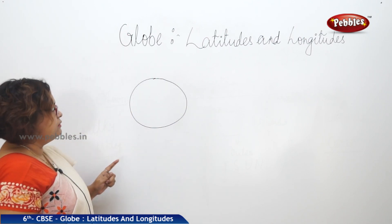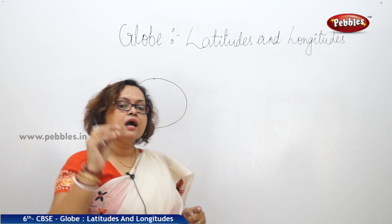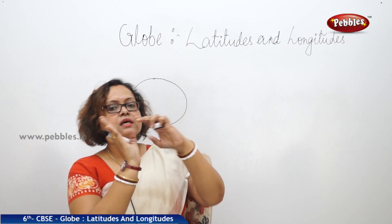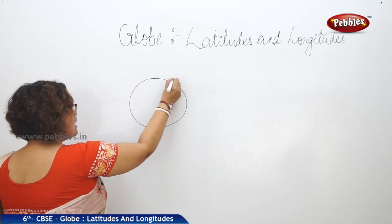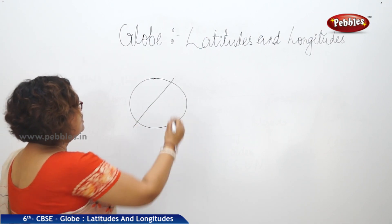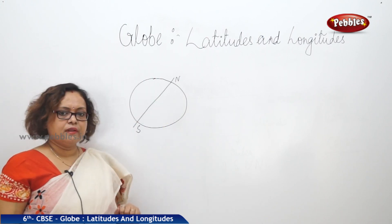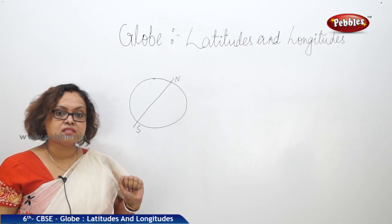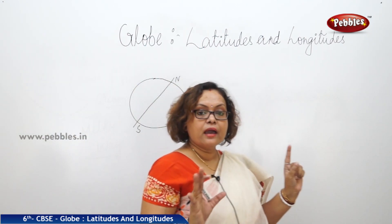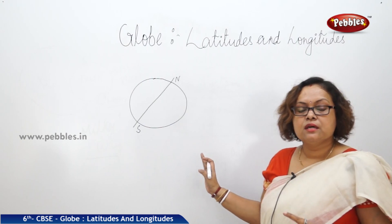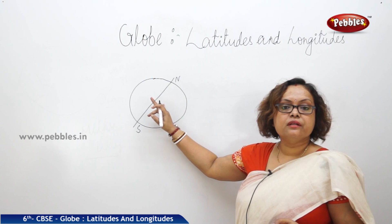If you observe a globe, you will see it is not straight — it is a little tilted. There is an imaginary line joining the North Pole and South Pole, and this imaginary line is known as the axis. Remember, in the real Earth there is no such line. It is our imagination, so we call it an imaginary line.